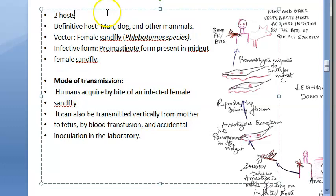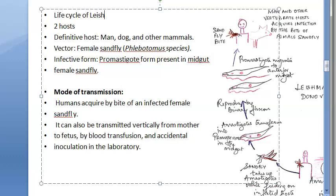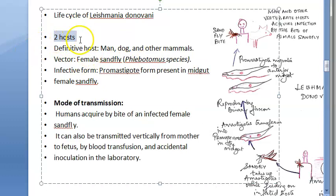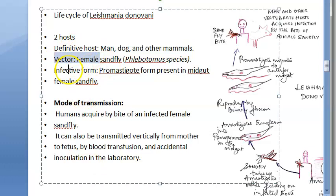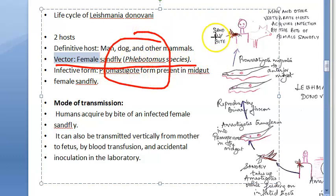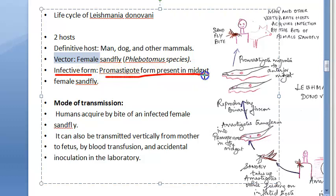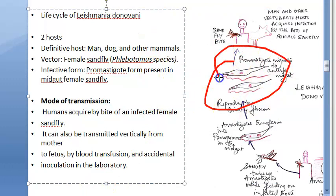Looking at the life cycle of Leishmania donovani — there are two hosts: man and the sandfly. The definitive hosts are man, dog, and other vertebrate hosts. The vector is the female sandfly, Phlebotomus. The infective form is the promastigote, which is present in the midgut of the female sandfly. Remember: in the sandfly there is the promastigote form, and in man there is the amastigote form.